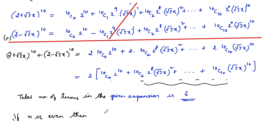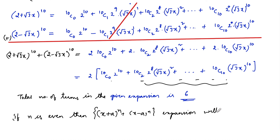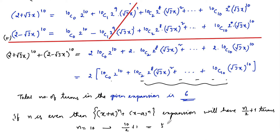We can also simply remember: if n is even, then the expansion (x + a)^n + (x - a)^n will have n/2 + 1 terms. So here n = 10, so 10/2 + 1 = 5 + 1 = 6 terms. You can just simply remember this concept. Thank you.